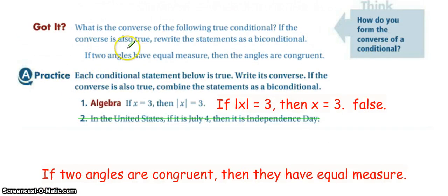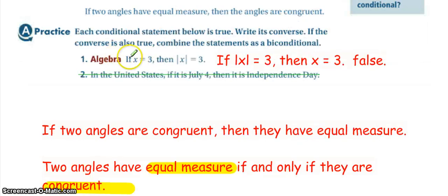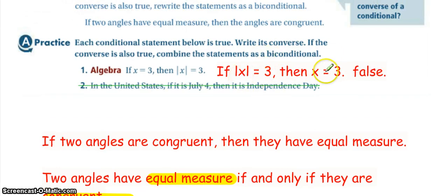The converse of our statement is: if two angles are congruent, then they have equal measure. To combine both, two angles would have equal measures if and only if they are congruent, which is true because equal measure and congruent are essentially the same thing. If the absolute value of x is three, then x must be three, which is false. Because the converse of the conditional is false, we cannot write a bi-conditional statement.